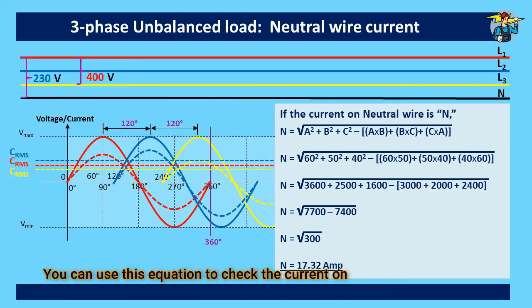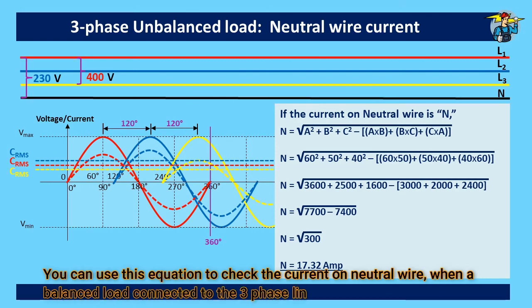You can use this equation to check the current on neutral wire when a balanced load connected to the 3 phase line too.